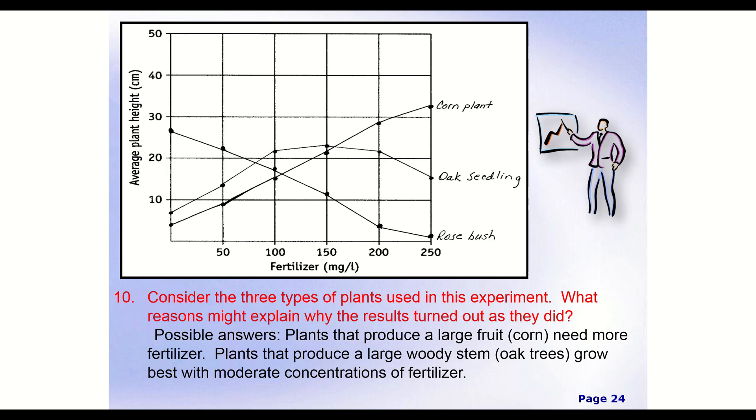So, some of those possible answers, you can feel free to write your own. That is totally fine. I just want to give you a few possible answers in case you get stuck. And that's going to be plants that produce a large fruit, in this case, corn. We actually call it a fruiting body. It's kind of a weird term because it's not actually a fruit. I understand that. That's actually a term we use. Need more fertilizer. We talked about that. Plants that produce a large woody stem, so like oak trees, grow best with moderate concentrations of fertilizer. So, something about their anatomy, something about them, large amounts of fertilizer harms them. And that's what it's telling us, and that's definitely a possibility.